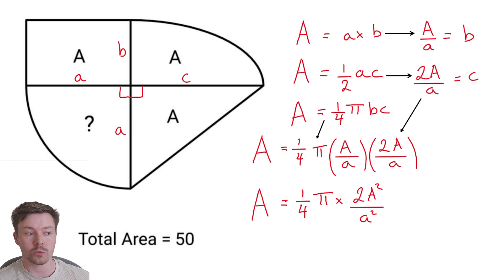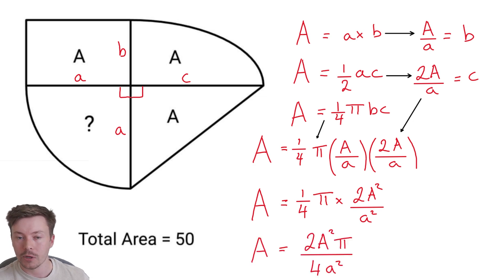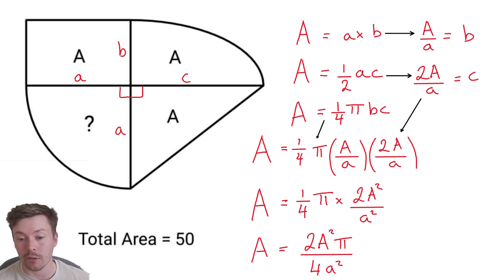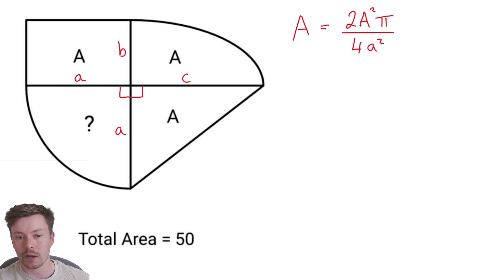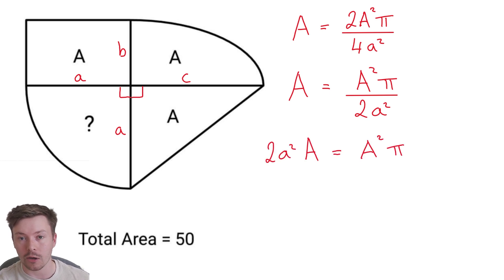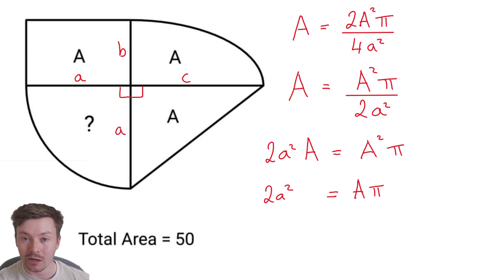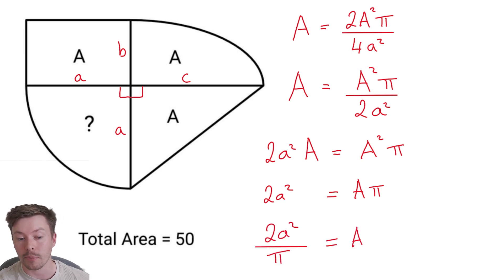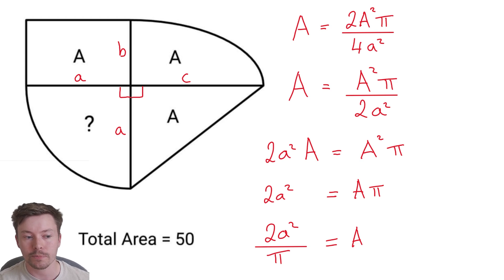After substitution and simplification we get: capital A is equal to a quarter pi times two capital A squared over lowercase a squared, which simplifies to two times capital A squared times pi over four lowercase a squared. To get capital A by itself, I cancel the two and the four leaving two on the denominator, multiply by the denominator, cancel the A on both sides, then divide both sides by pi. So capital A equals two lowercase a squared over pi.